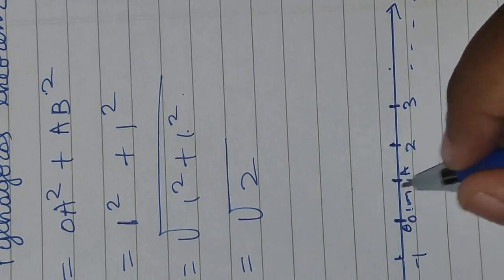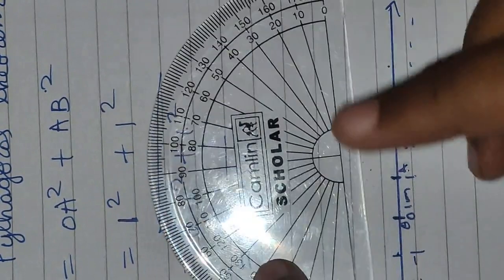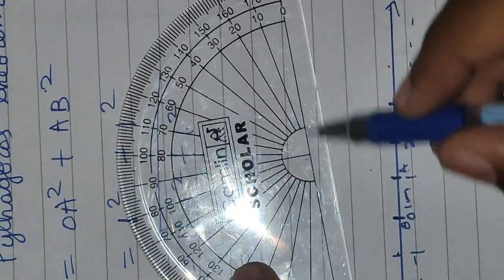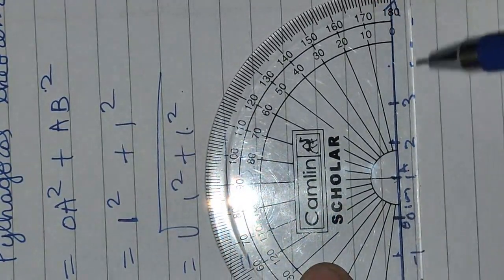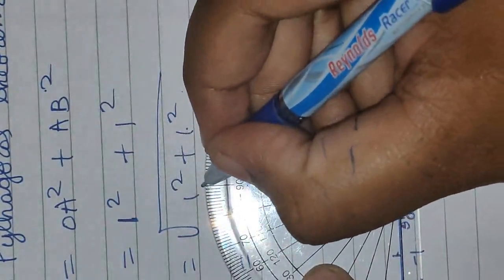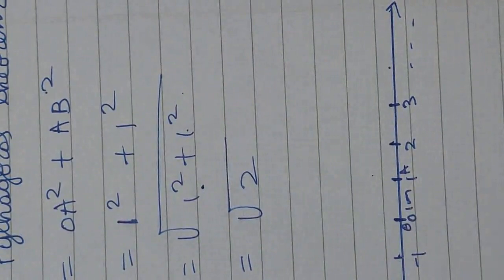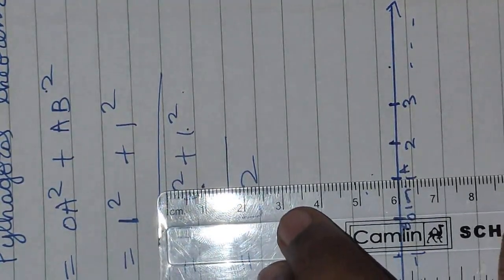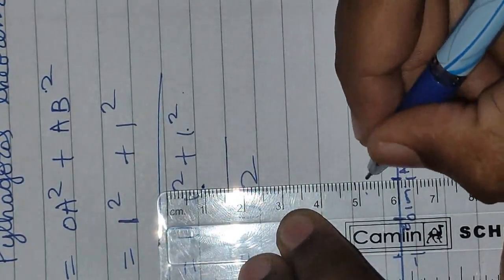Now I should draw a perpendicular line. Using a protractor — the center point of the protractor should coincide with point A, and the base line of the protractor should be on the number line — then only will we get 90 degrees. Mark 90 degrees at point A. Then take a scale and draw a 1 cm line from that 90 degree point.